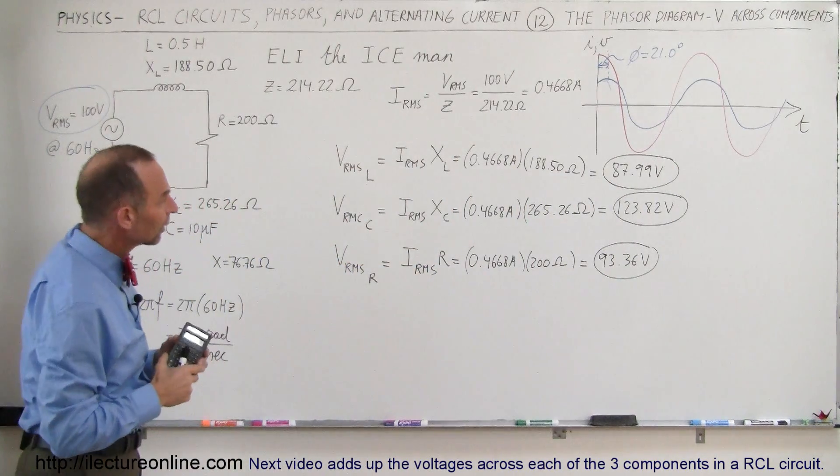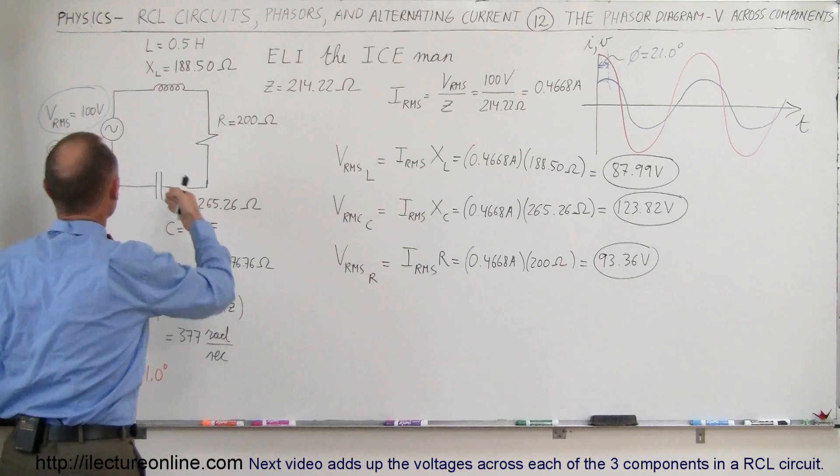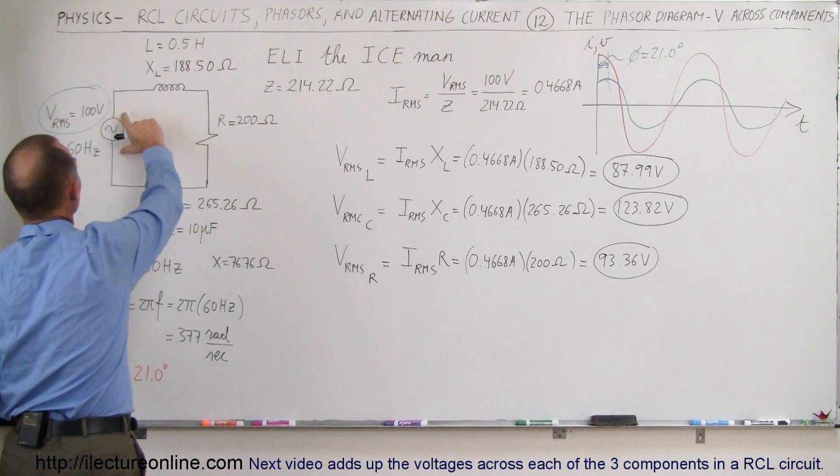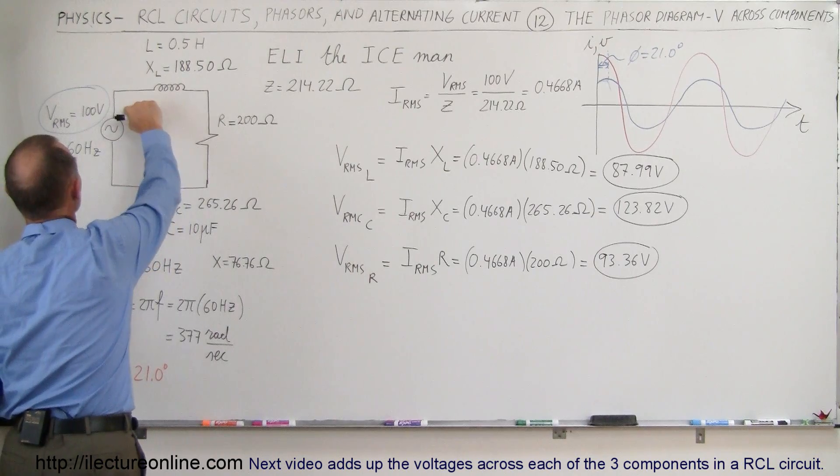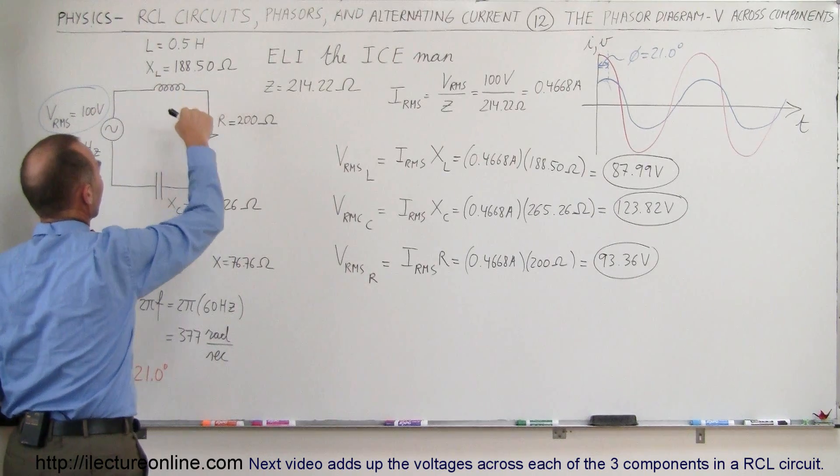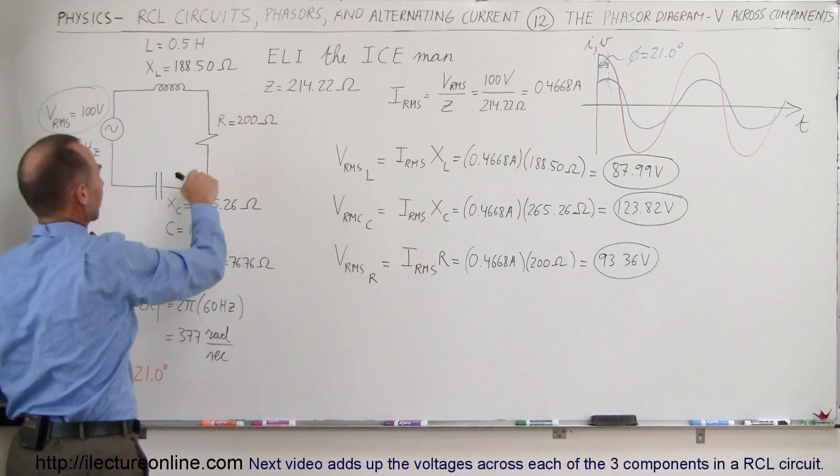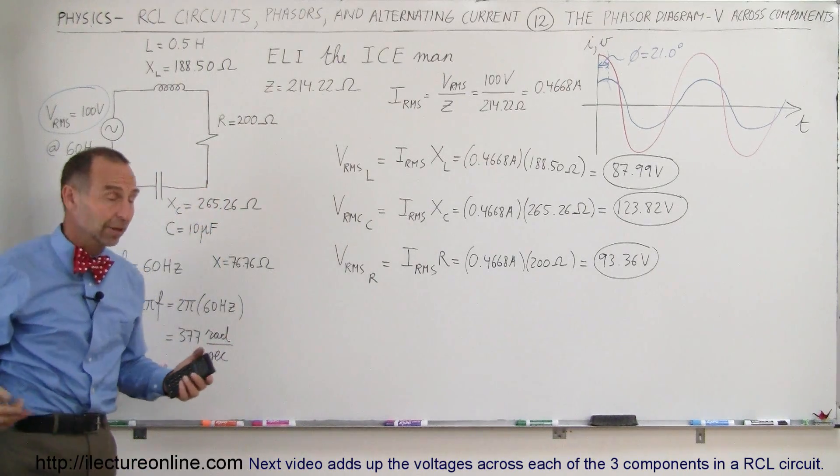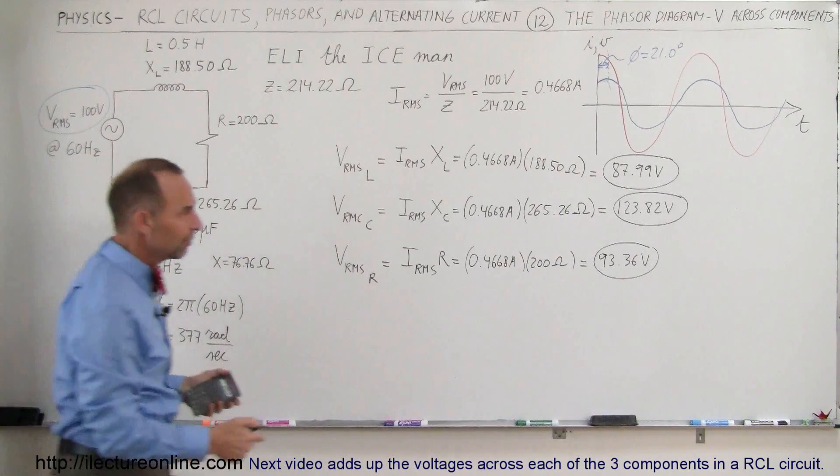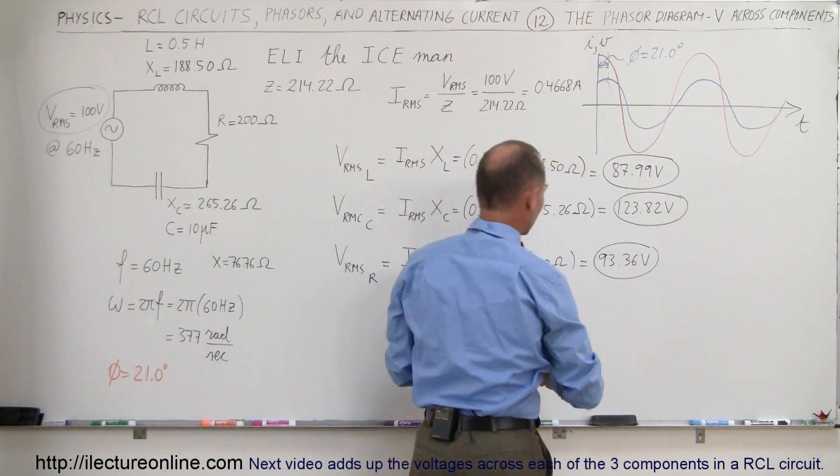It's kind of odd when you look at that because typically, if you use Kirchhoff's rule and go all the way around the circuit, you can see that when we go across the voltage source we have 100 volt RMS, then we have a voltage drop across the inductor, a voltage drop across the resistor, and a voltage drop across the capacitor. And so those three voltages should add up to the voltage of the source.